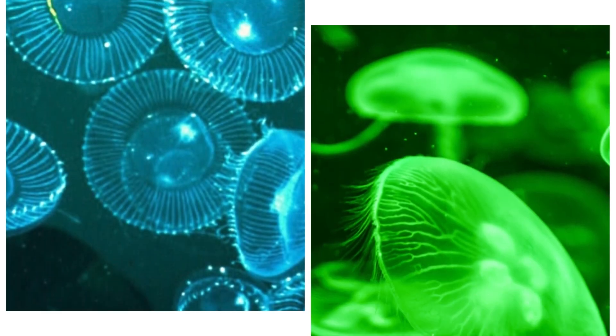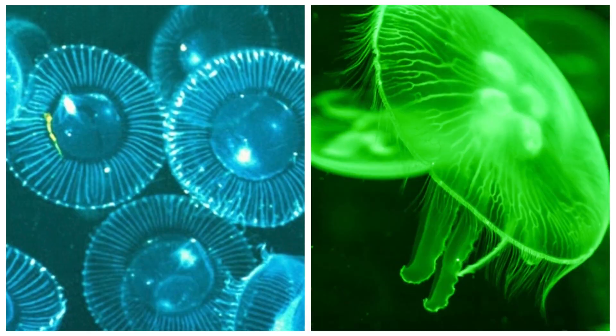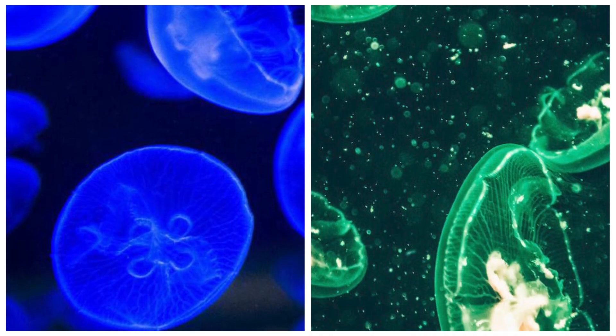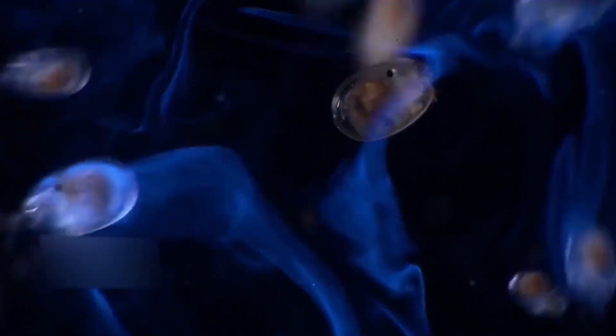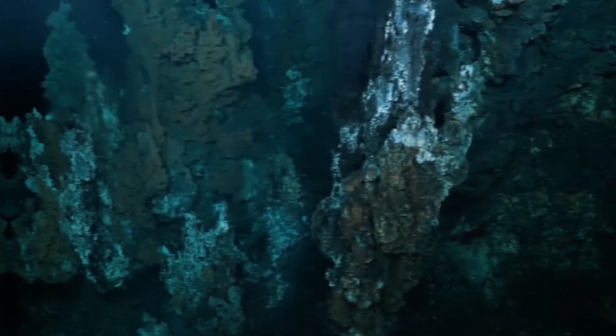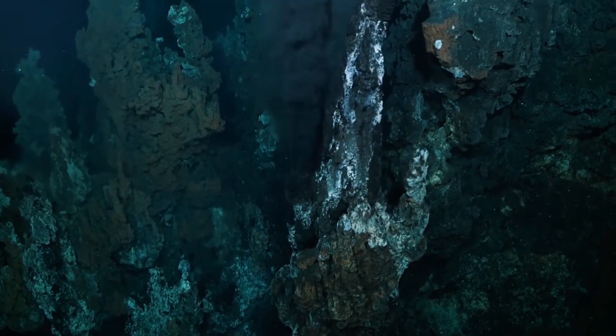The colors of bioluminescence in the deep sea are predominantly blue and green. This isn't a random choice, but a result of evolution fine-tuning the process. Blue and green light waves travel the farthest through water, making them the most visible colors in the deep sea. It's nature's way of ensuring that when these creatures light up, they're seen by those they intend to communicate with.